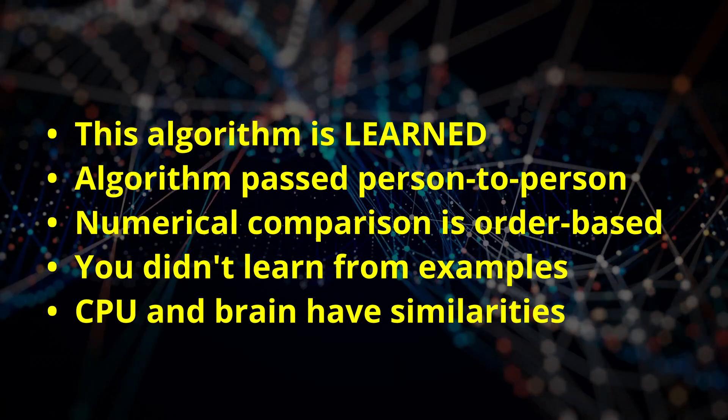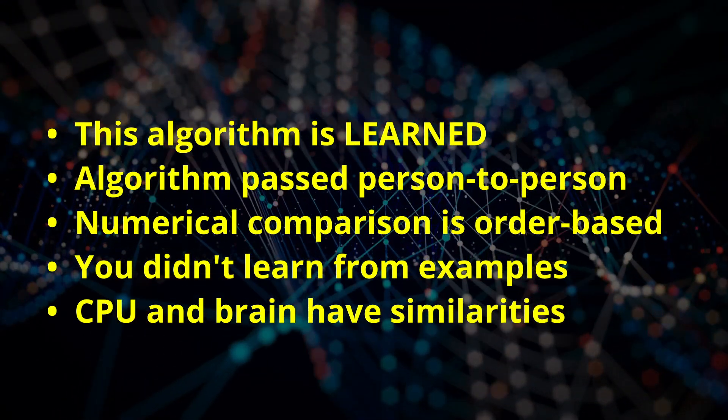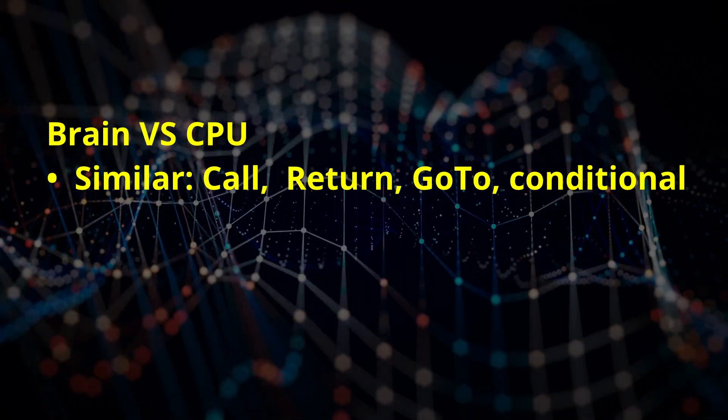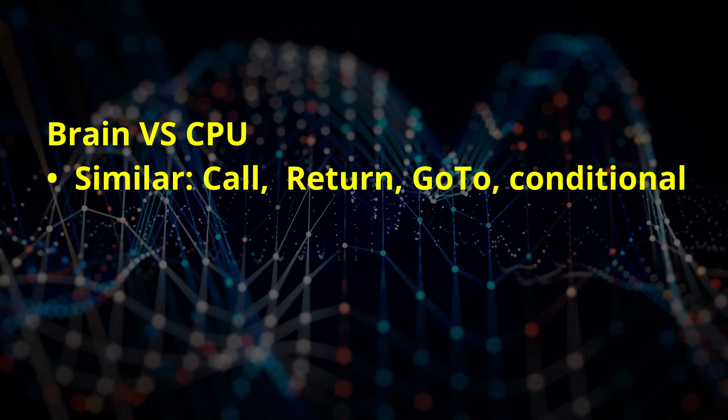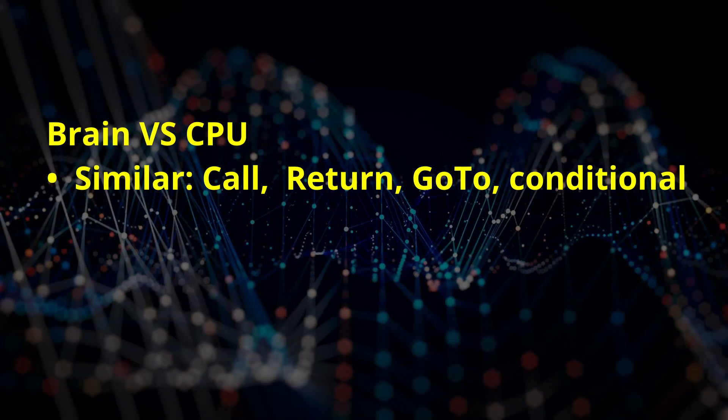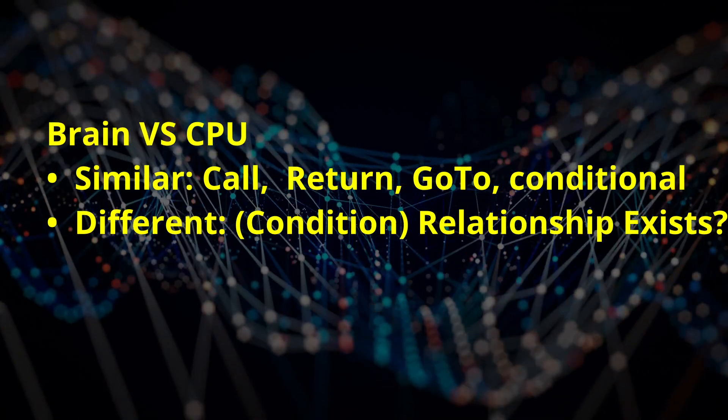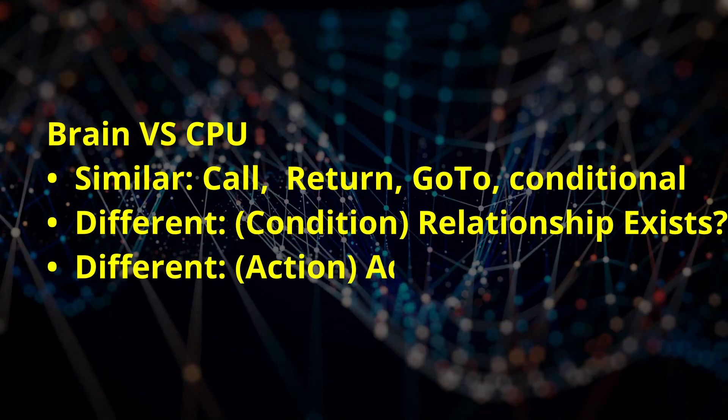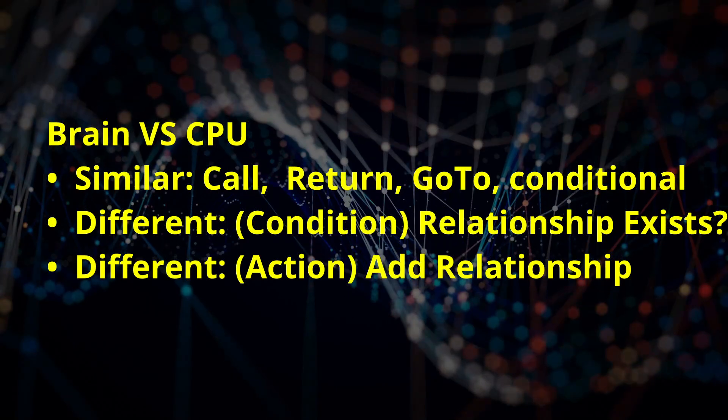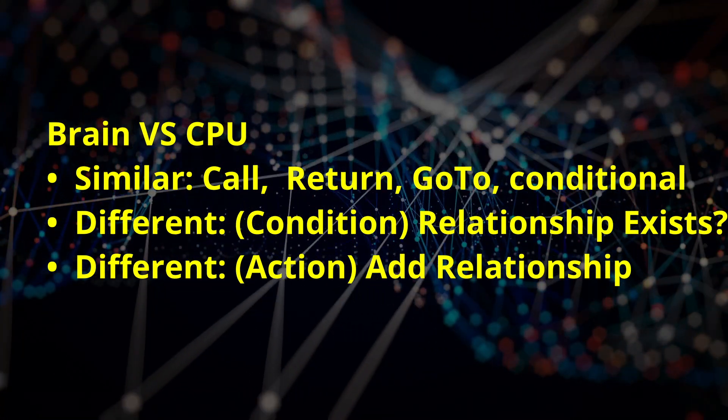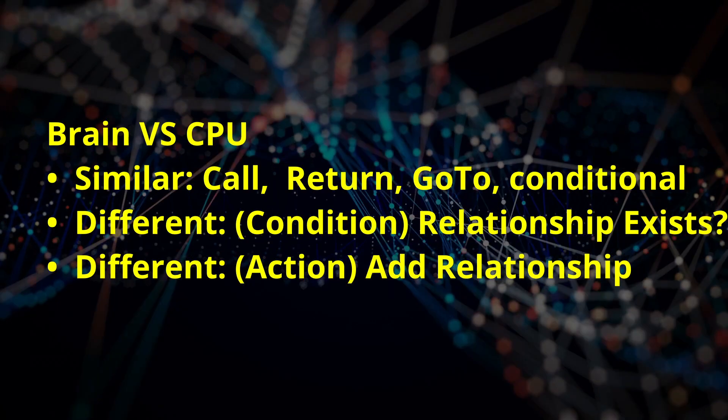From a computing perspective, this algorithm uses a number of CPU-like instructions, function call and return, go-to, and the ability to check for a condition. Unlike a CPU, the conditions to check for are likely the existence of a relationship, and the action is to create a relationship between two given things. We could build CPUs with these capabilities, but we haven't yet.